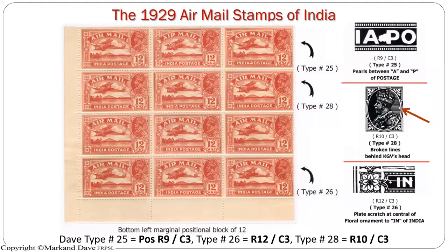Now for the twelve annas: type 25, type 28, and type 26. Type 25 shows pearls between the A of India and the P of 'Postage.' Type 28 shows broken lines behind the King's portrait. Type 26 shows a plate scratch on the center of the floral ornament. I had singles and multiples — nearly seven to eight examples of each. When I discovered a block, it revealed where exactly these errors fall. This is a bottom left marginal block: first column, second column, and all these varieties fall on the third column. The top one is row 9, the next is row 10, and type 26 is on row 12.